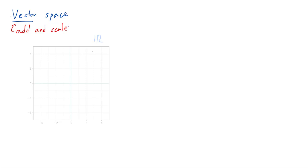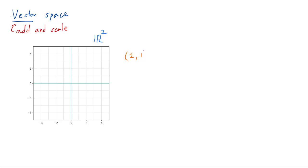Here in particular, I have a graph of R2. R2 is simply a collection of ordered pairs consisting of two real numbers. So for example, (2, 1) is a vector in R2. And in linear algebra, we're usually going to write this as a column vector with 2 at the top and 1 at the bottom.